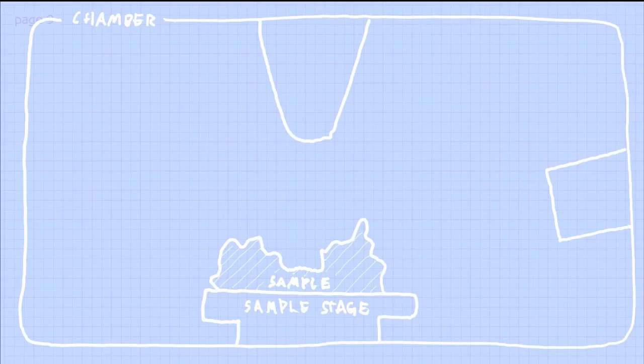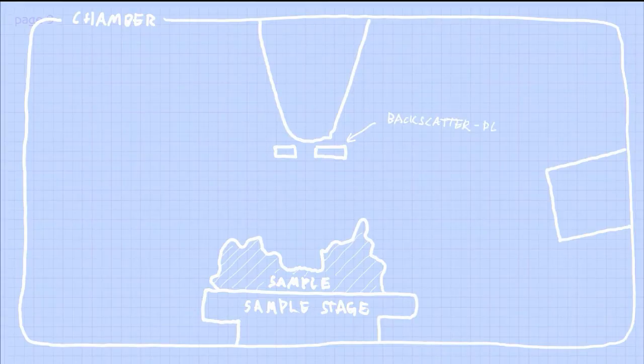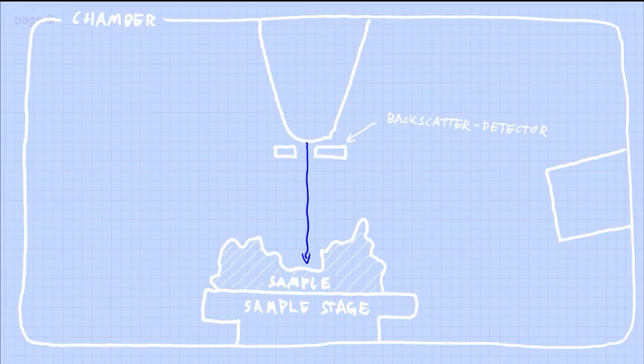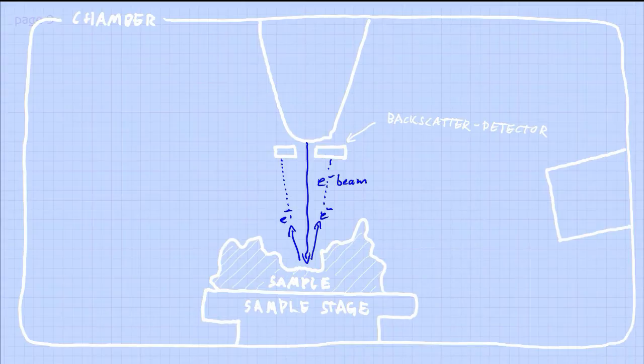So now let's discuss the backscattering detector instead. The backscattered detector is located right beneath the gun here. And this detector picks up the high energy electrons that are backscattered from the sample when you shoot at it. The number of electrons that are backscattered is depending on the material that the samples are made out of. If it is heavy elements then they will generate more backscattered electrons. And that will emerge as whiter colors in the image.